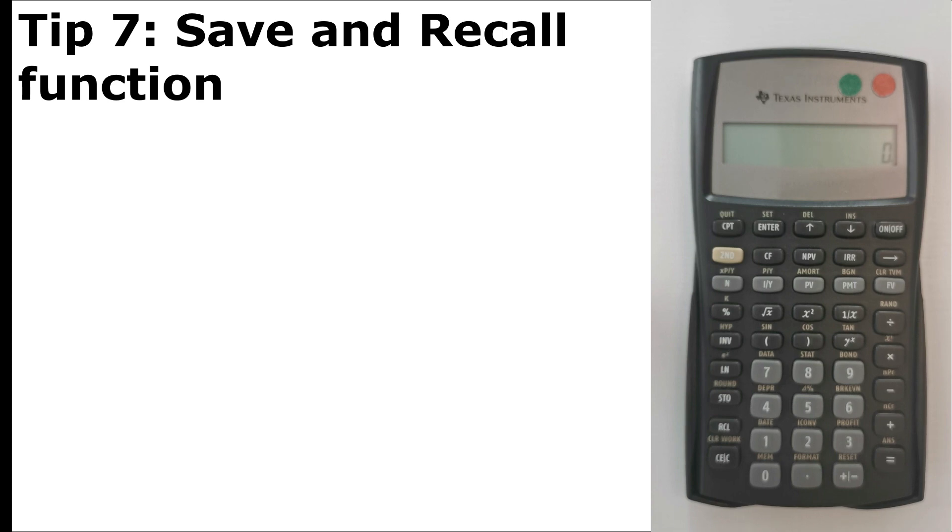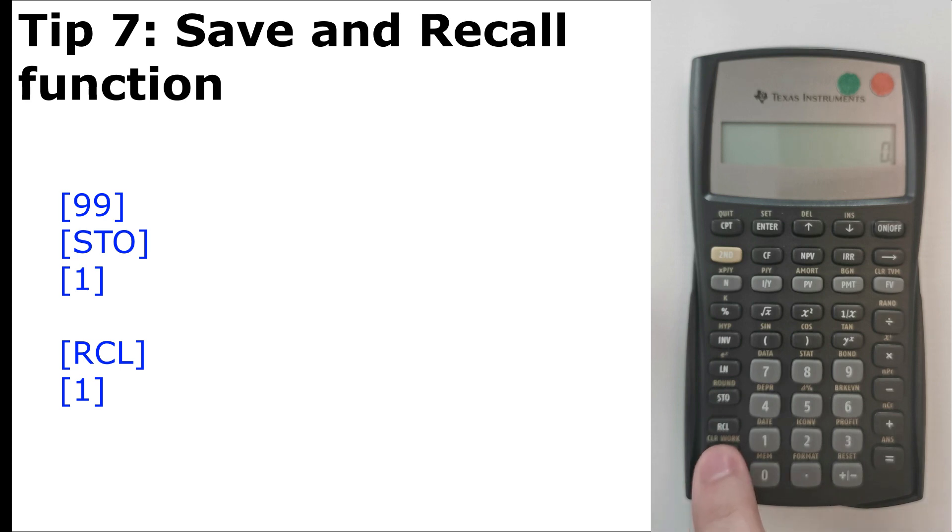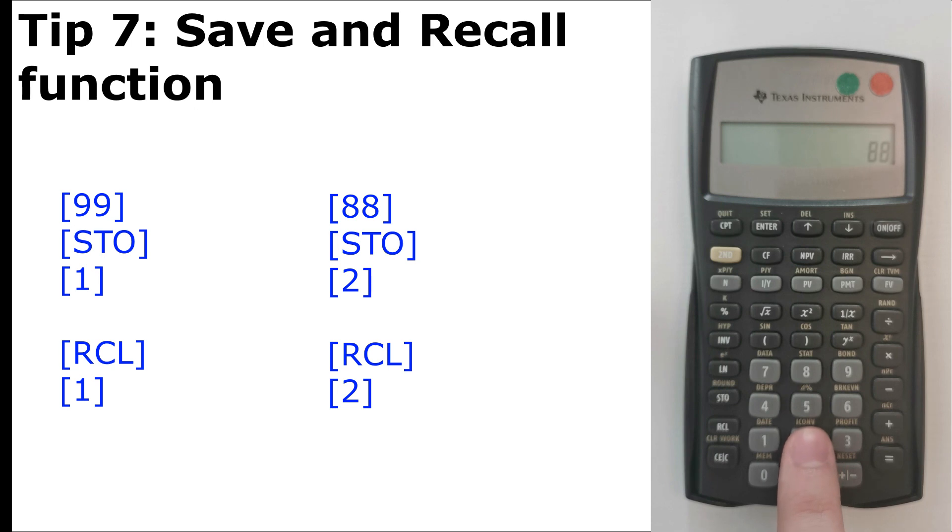And for the last function I'll be showing you today is how to save the number and then recall it back. So let's say we're going to save 99, we press STO, which is save, we're going to save it as the first number. So if we press now recall RCL, 1, we get 99. We can save it throughout all the numbers, so let's say we save 88, and we also want to save it as the second. So now if you want to recall the second, we get 88, and recall RCL the first, we get 99.